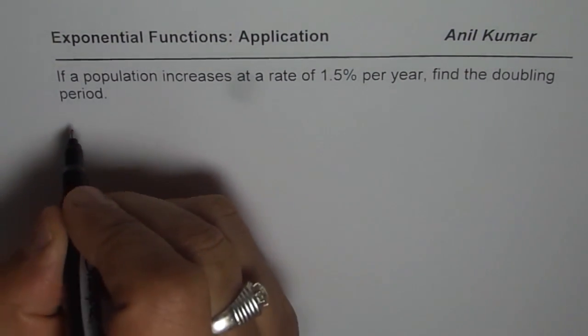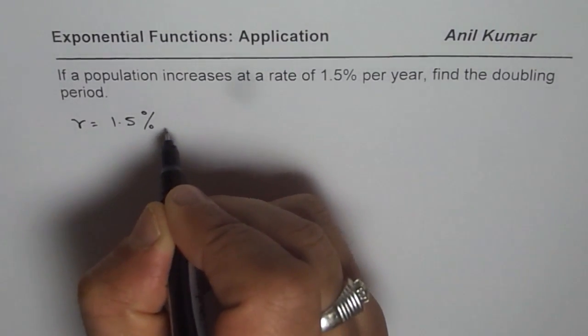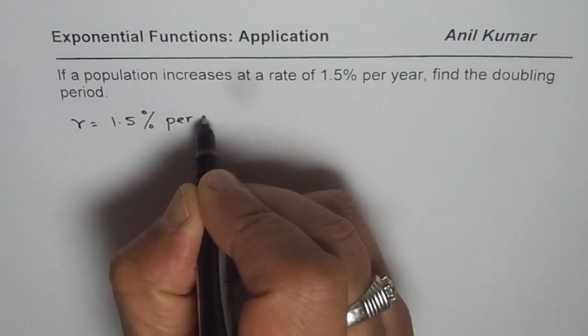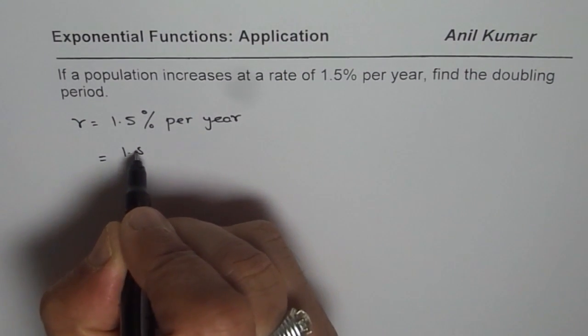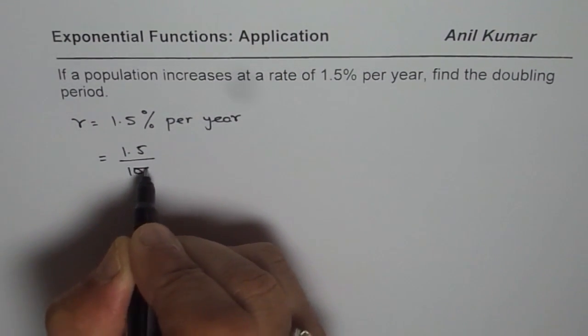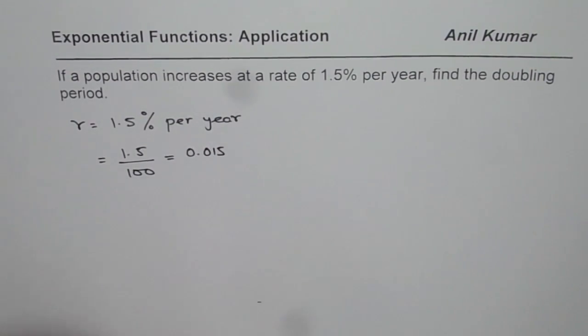So what we are given is the rate of increase, which is 1.5% per year. This really means 1.5% is 1.5 over 100, which could be written as 0.015. That is the rate.